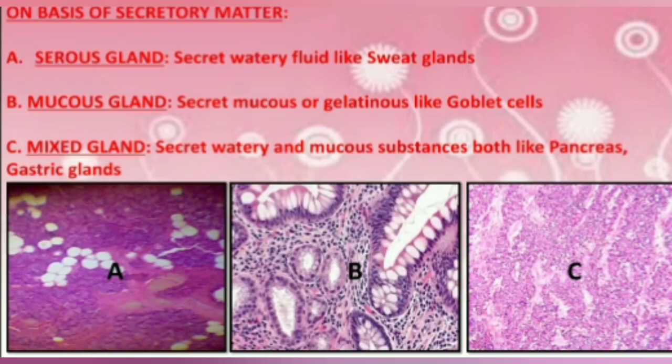On the basis of secretory matter, glands can also be divided into three types: serous glands, which secrete watery fluid like sweat glands; mucus glands, which secrete mucus or gelatinous substances like goblet cells; and mixed glands, which secrete both watery and mucus substances, like the pancreas and gastric glands.